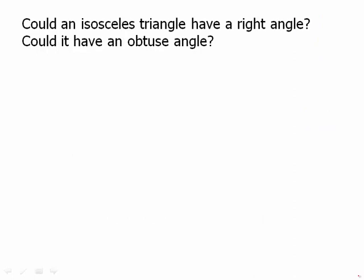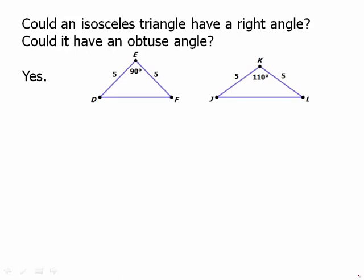Could an isosceles triangle have a right angle? Could it have an obtuse angle? You might want to pause the video and think about this for a moment. Of course, the answer is yes in both cases. Here are isosceles triangles — one with a right angle, one with an obtuse angle. We can find the other angles in that right triangle: we have 90 degrees, so the other two angles add up to 90 degrees, meaning each one must be 45.